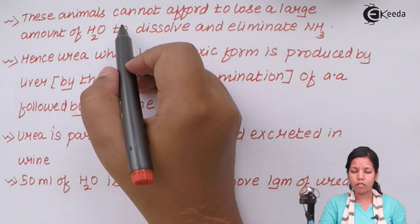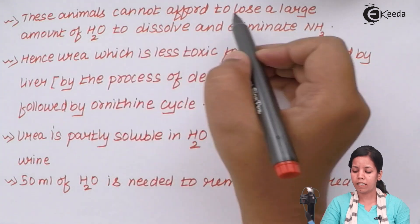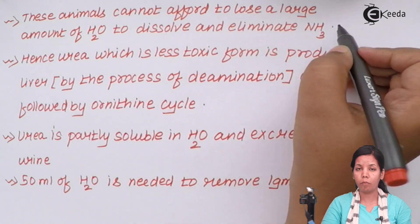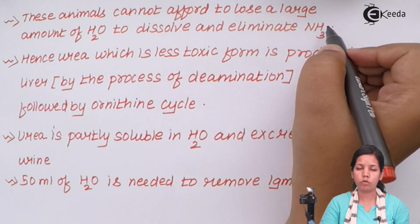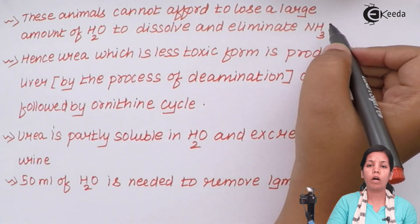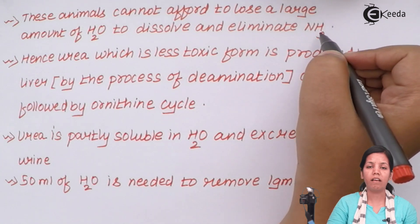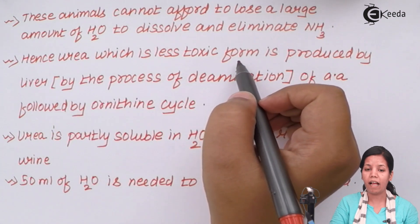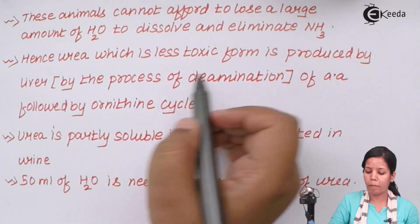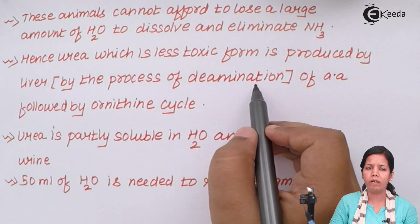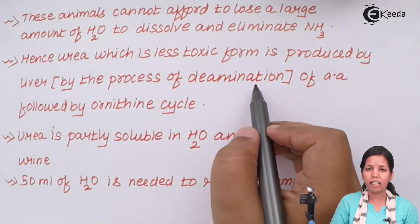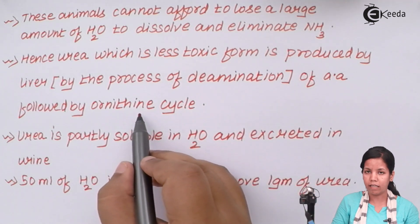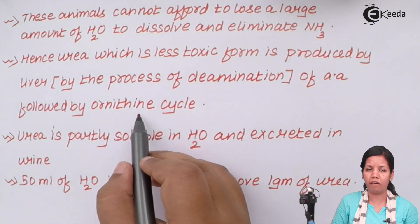Now these animals which are ureotelic cannot afford to lose a large amount of water just to remove that waste product, to dissolve and eliminate ammonia. Ammonia requires a lot of water to be dissolved and removed, and these animals who are ureotelic cannot afford that since they live in habitat which have shortage of water. Hence urea which is less toxic and requires less amount of water is produced by the liver by the process of deamination. Deamination is nothing but breaking down of proteins or amino acids followed by ornithine cycle in the terrestrial animals, especially in aves or birds.